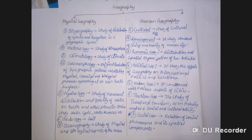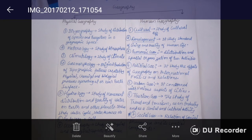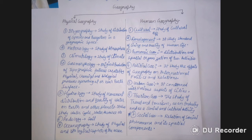The second broad branch of geography is human geography, and here are seven major branches. First is cultural geography — the study of cultural differentiation. Second is development geography — it studies the standard of living and quality of human life across different parts of the Earth's surface. Third is economic geography — the distribution and spatial organization of economic activities.